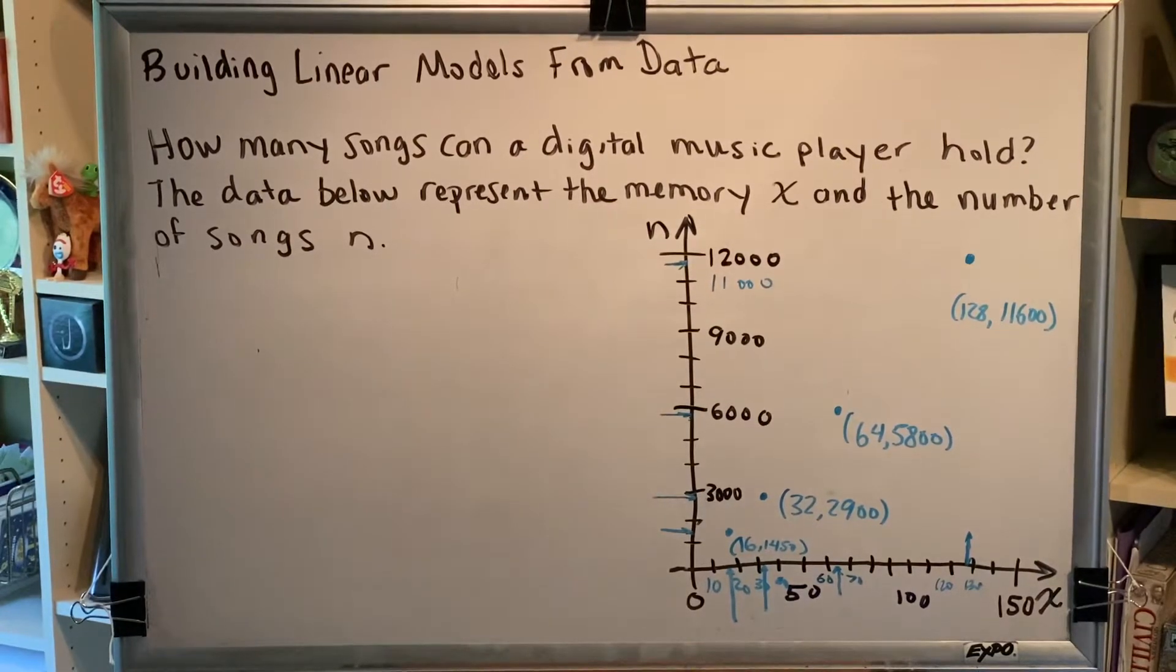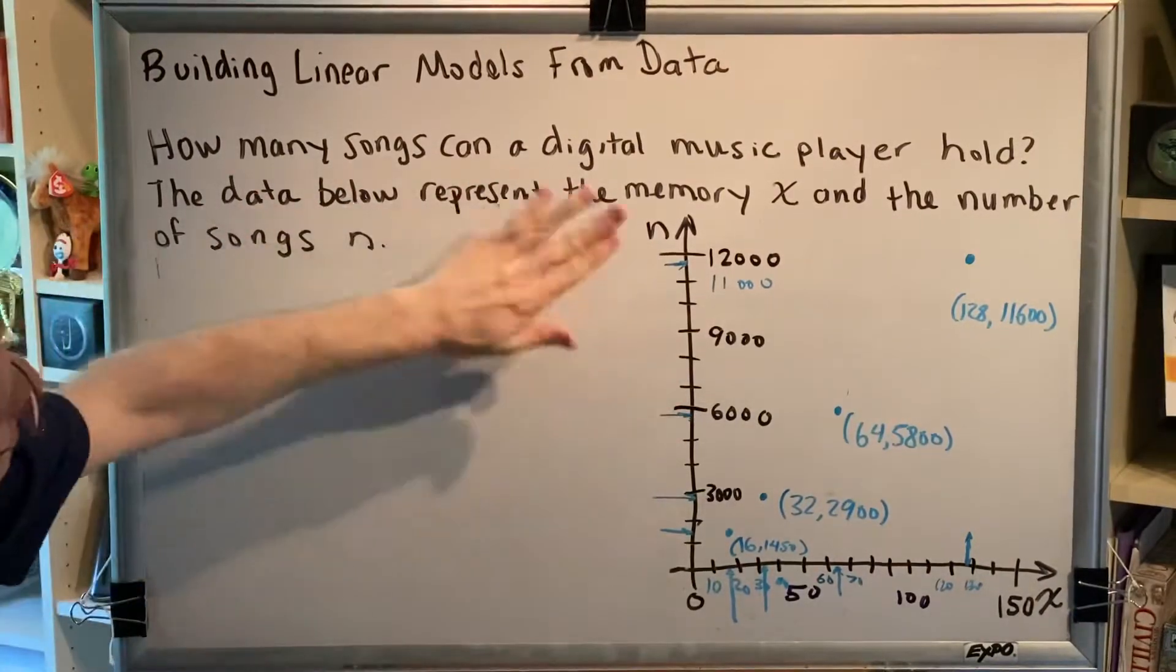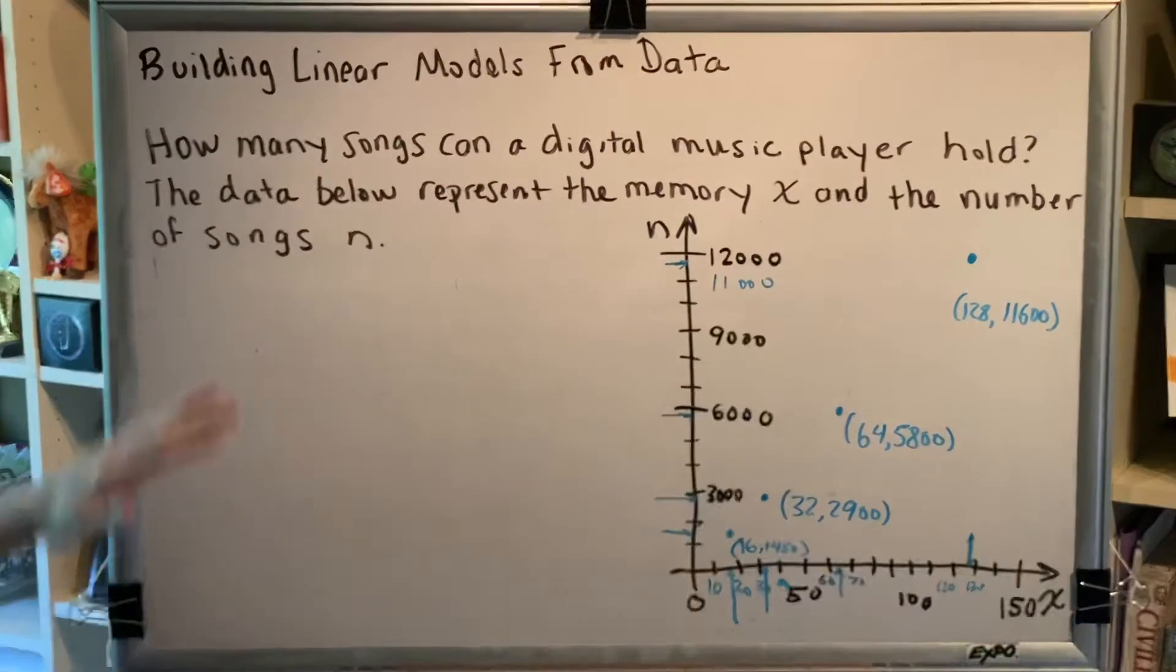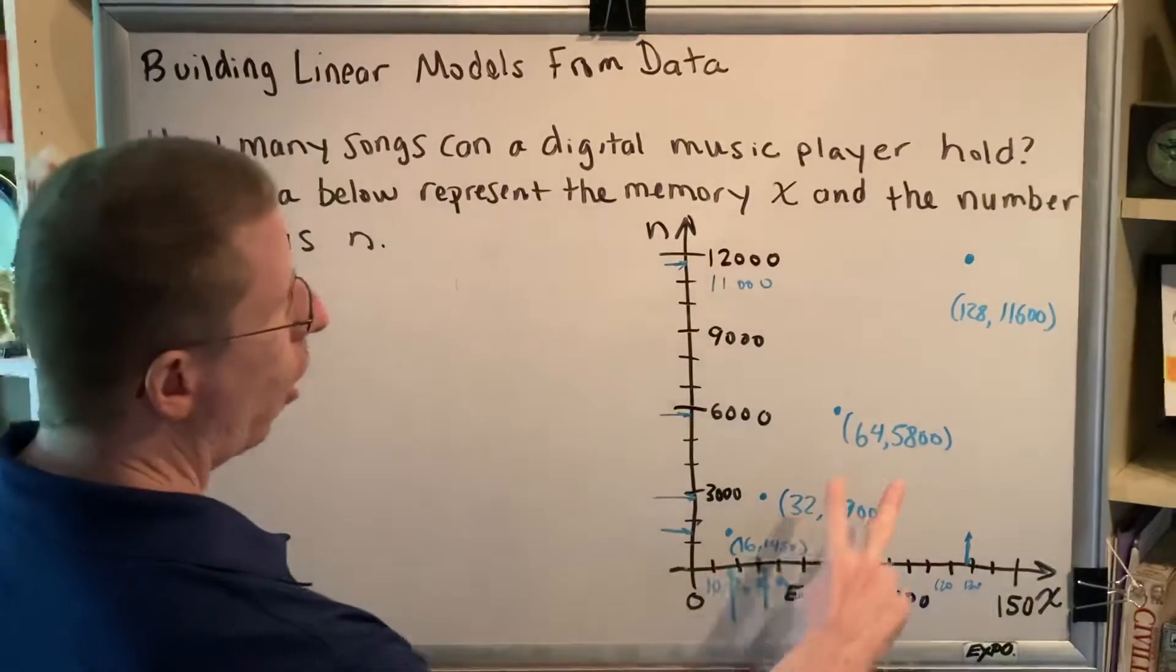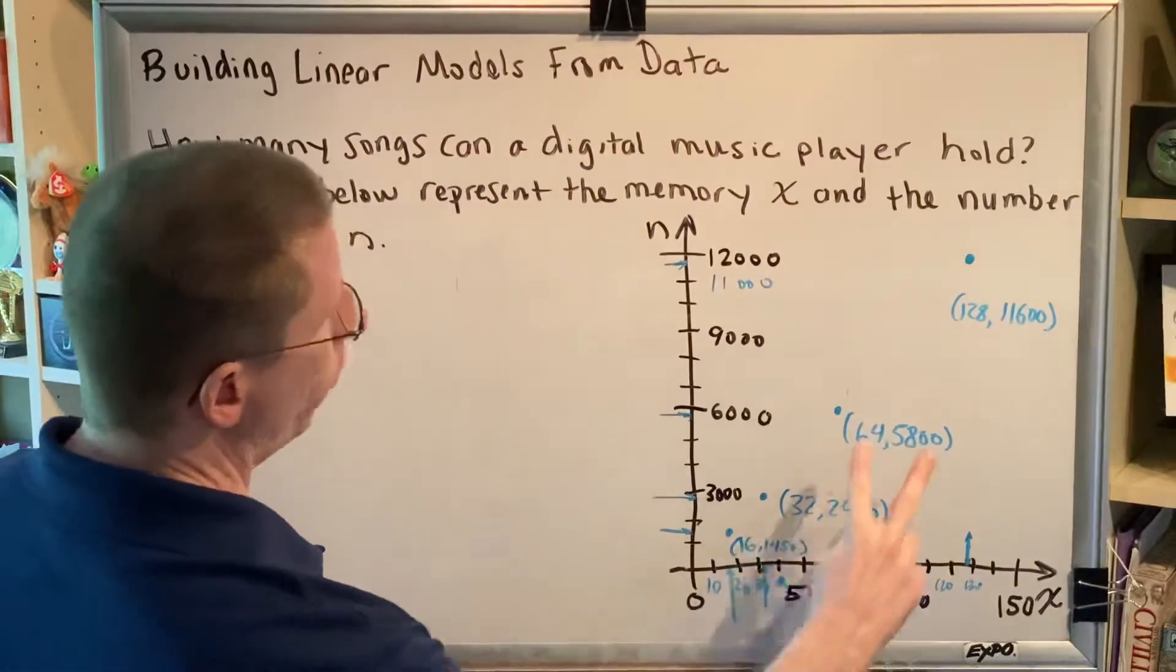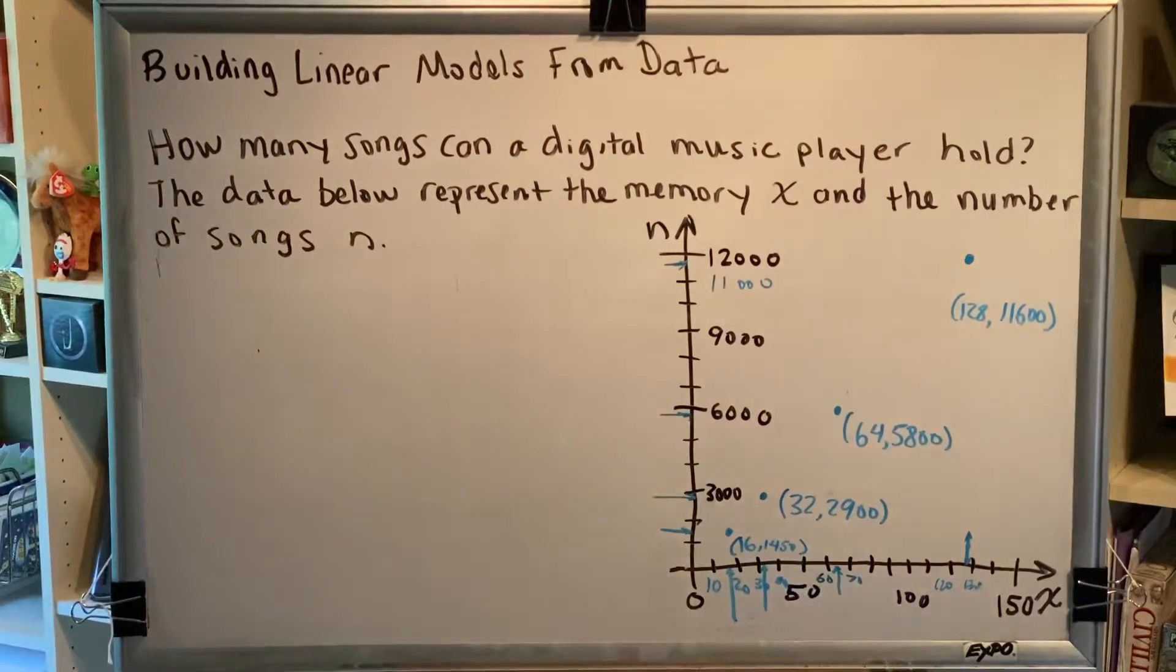So you notice that I made some changes here. I've cleared away the work that we wrote in finding that this was a linear function. I also cleared away the table of values because they're here represented on our ordered pairs for our graph. This will clear up some space so that we can continue on with the rest of this problem.